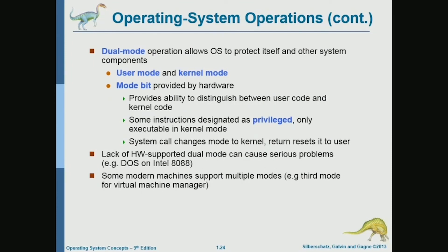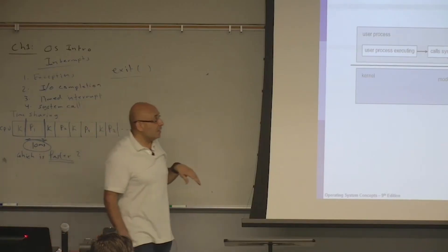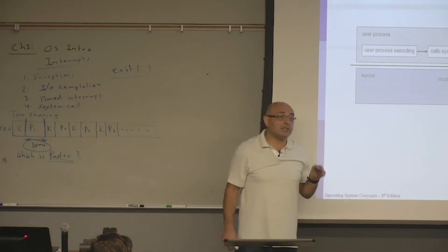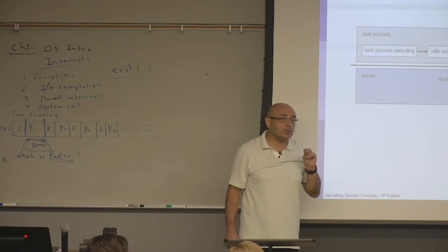We talked about dual mode operation. A user process executes in user mode. When it makes a system call, the mode bit is changed to zero to indicate kernel mode and now the kernel is executing. When the kernel is done, it sets the mode bit back to one. Whenever the kernel gives the CPU to a process, it must set the mode bit to one to indicate user mode, so that the hardware does not allow the user process to execute privileged instructions.